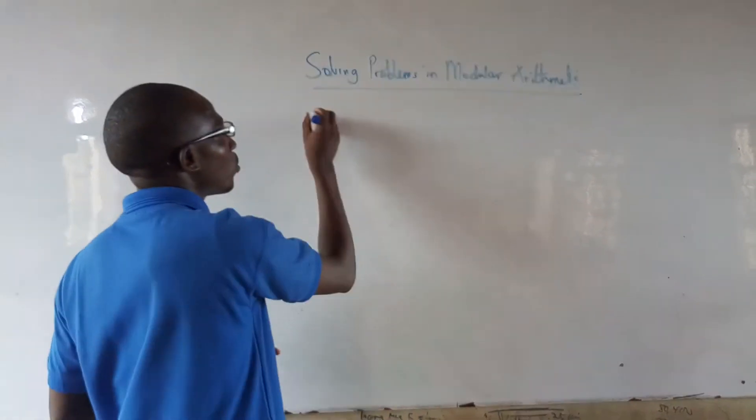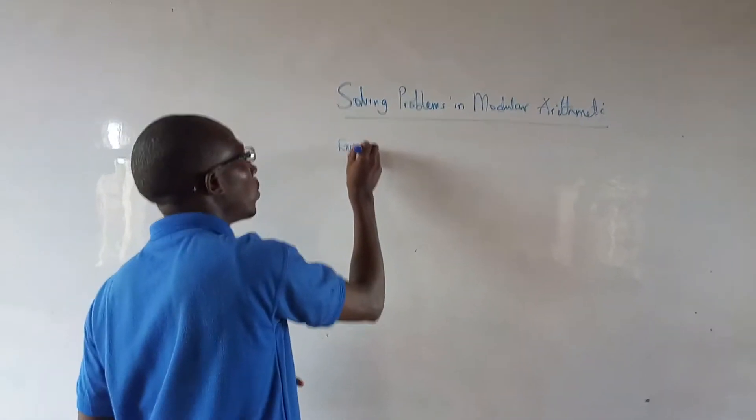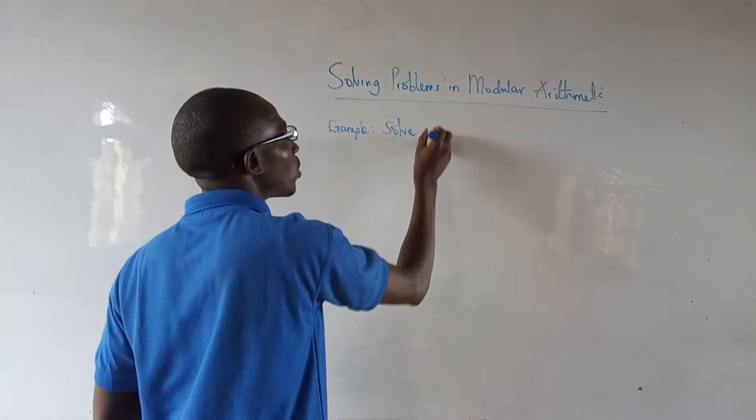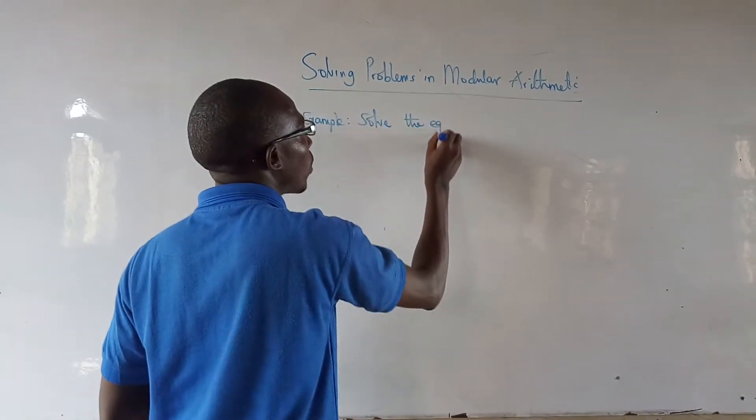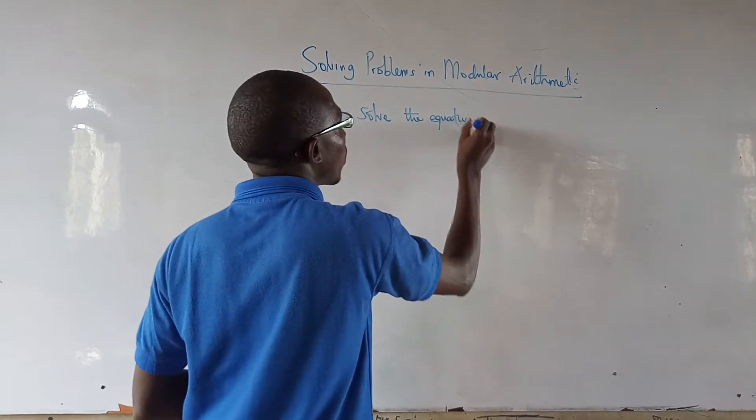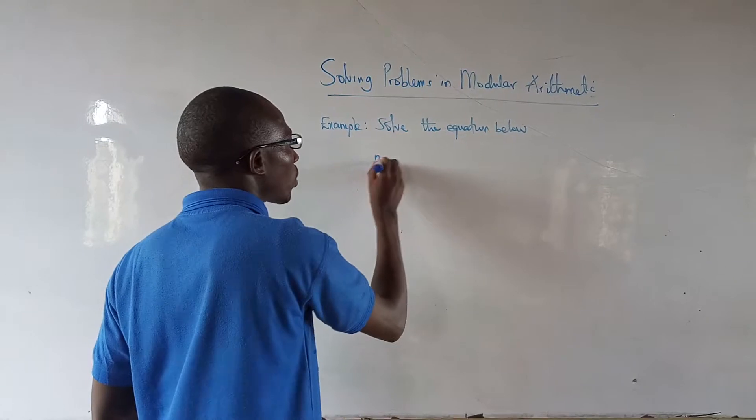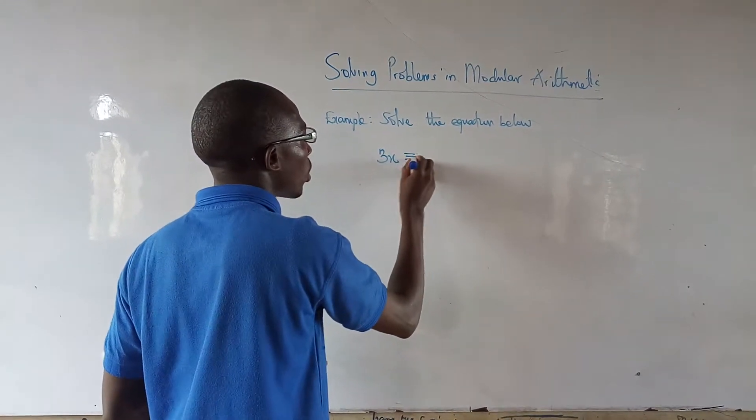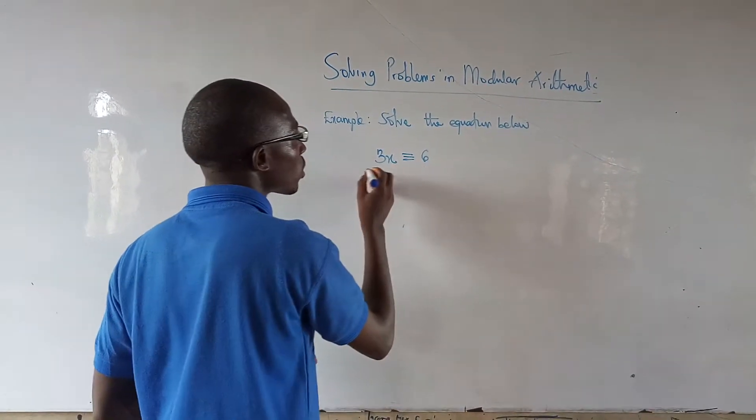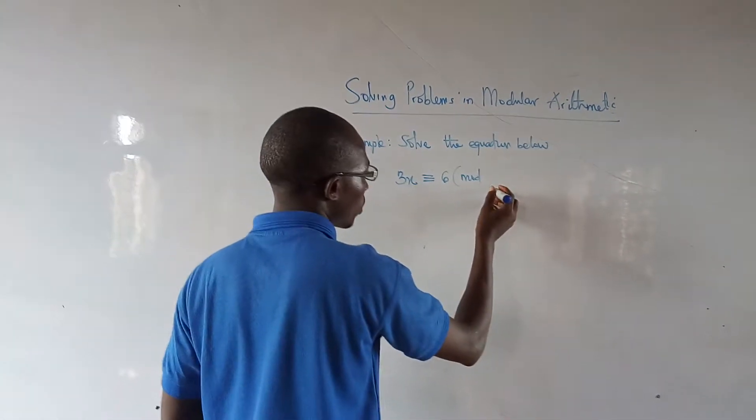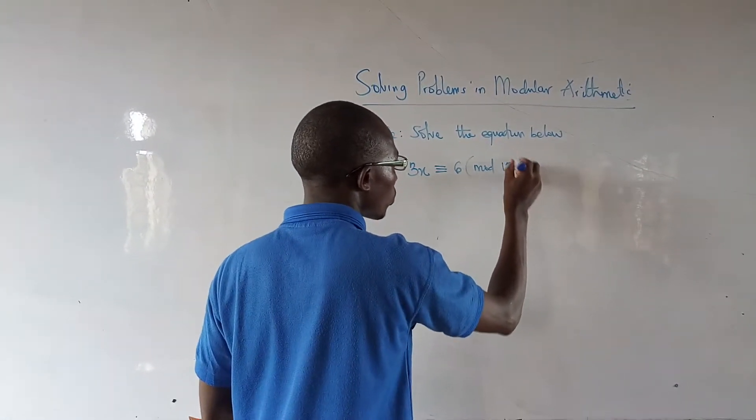For example, solve the equation below: 3x congruent to 6 mod 12.